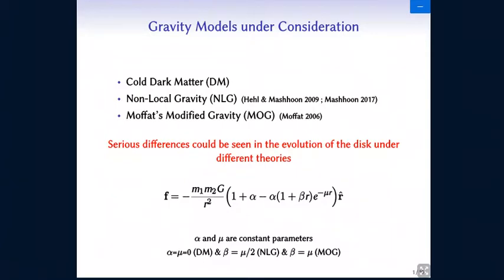As you saw in Mahmoud's talk in the morning sessions, the models of gravity that we've worked on and those that I am going to talk about in this work are Non-local Gravity by Mashkoon and John Moffat's modified gravity. As Mahmoud mentioned earlier, the basis of these two models are very different. However, the weak field limit of these two models looks very similar. As you see here, there are two free parameters in these two models alpha and mu, and there is this beta parameter that is half the value of mu for the NLG model and it is equal to the mu for the MOG.